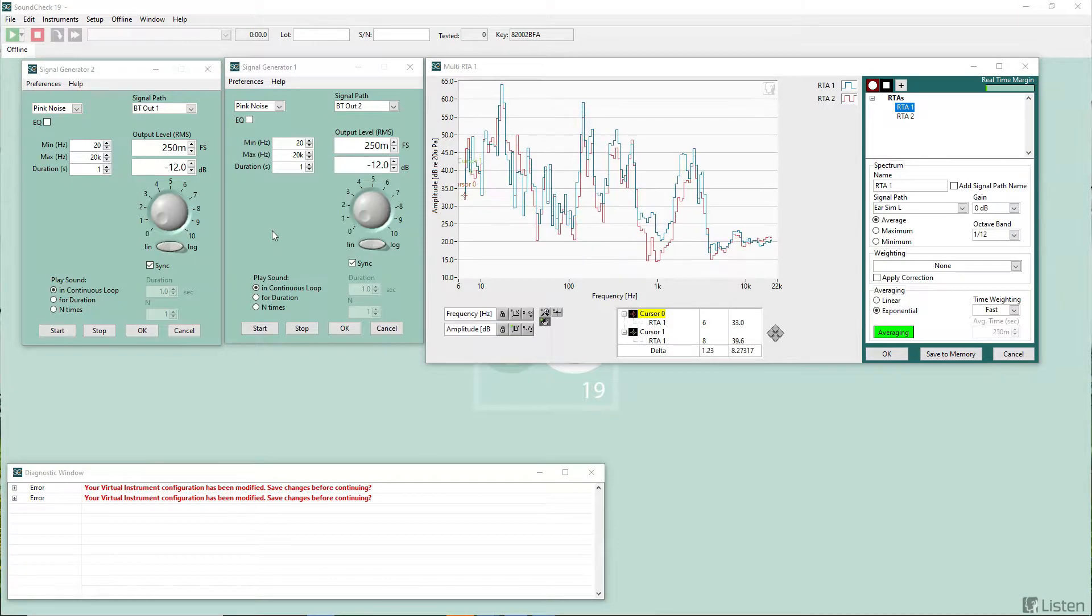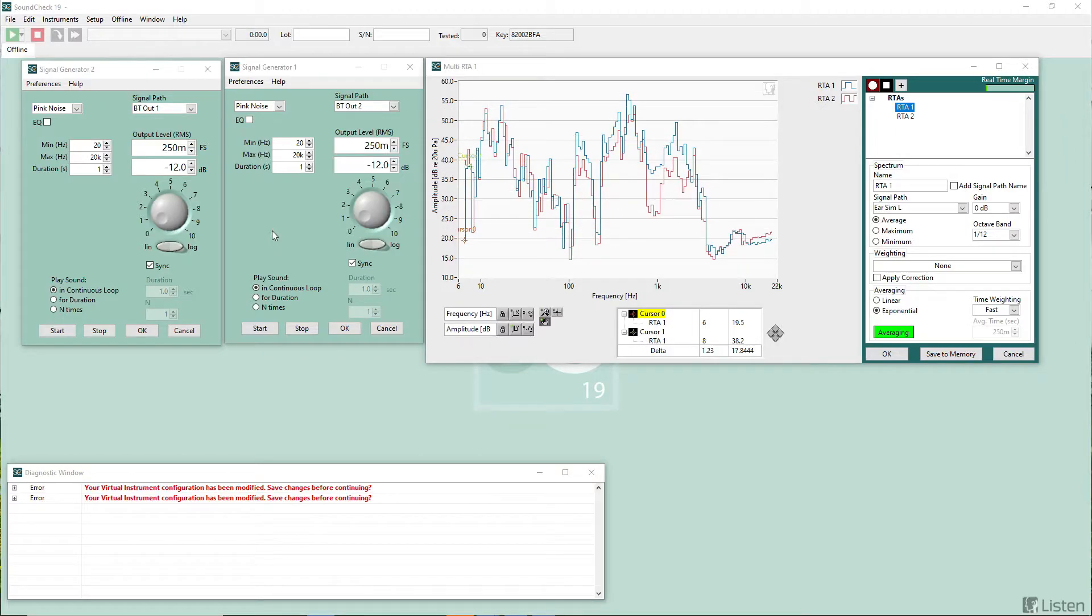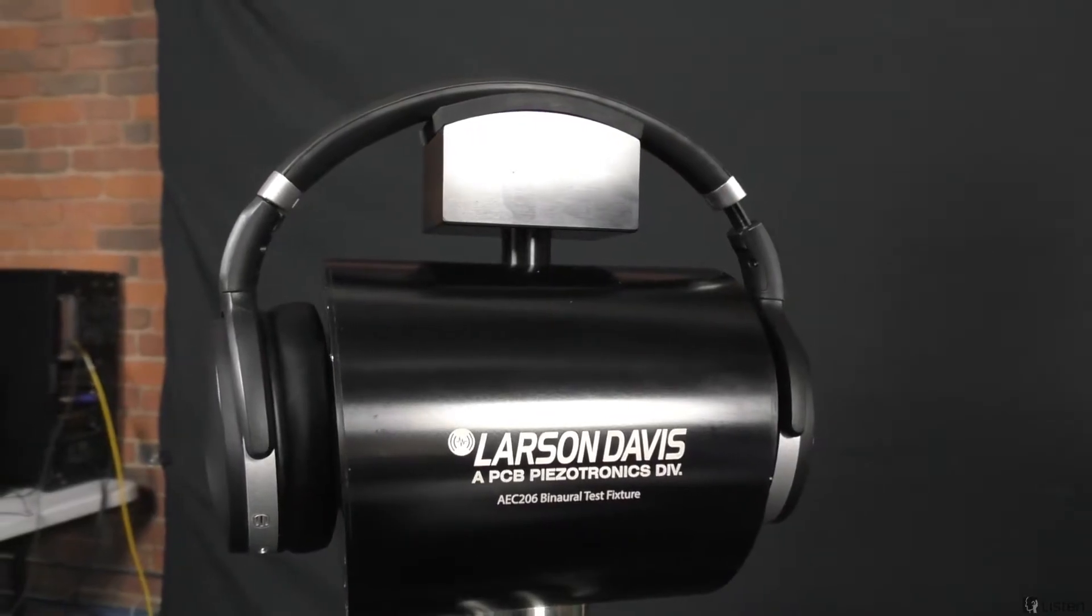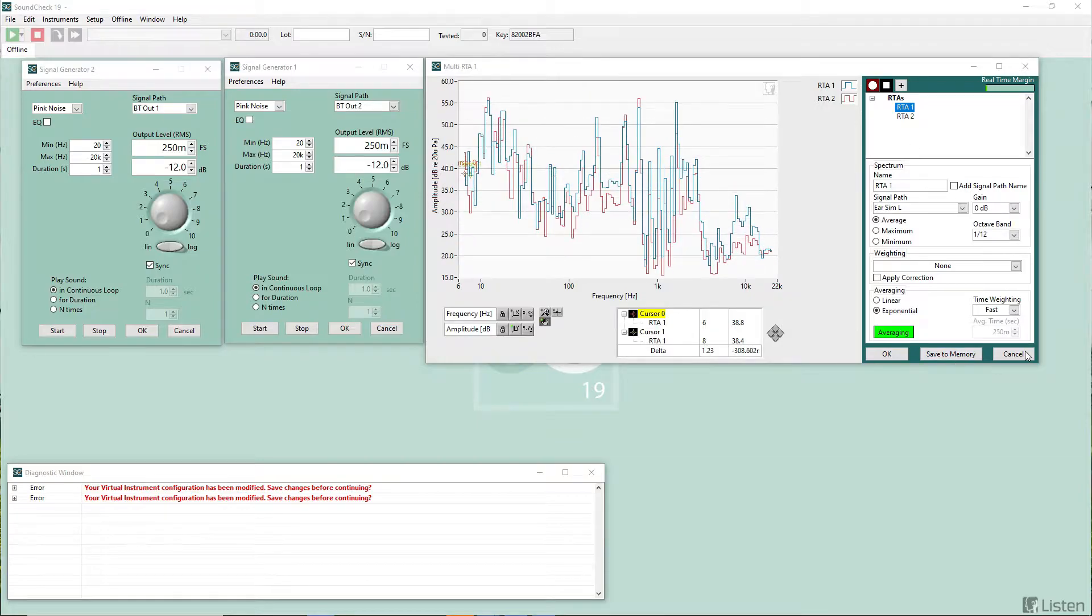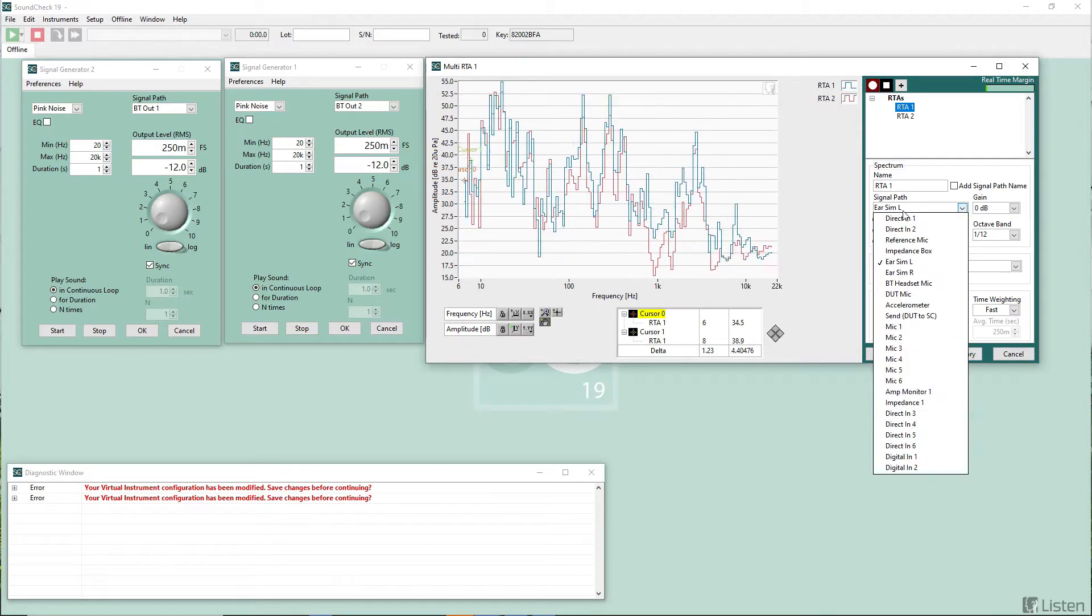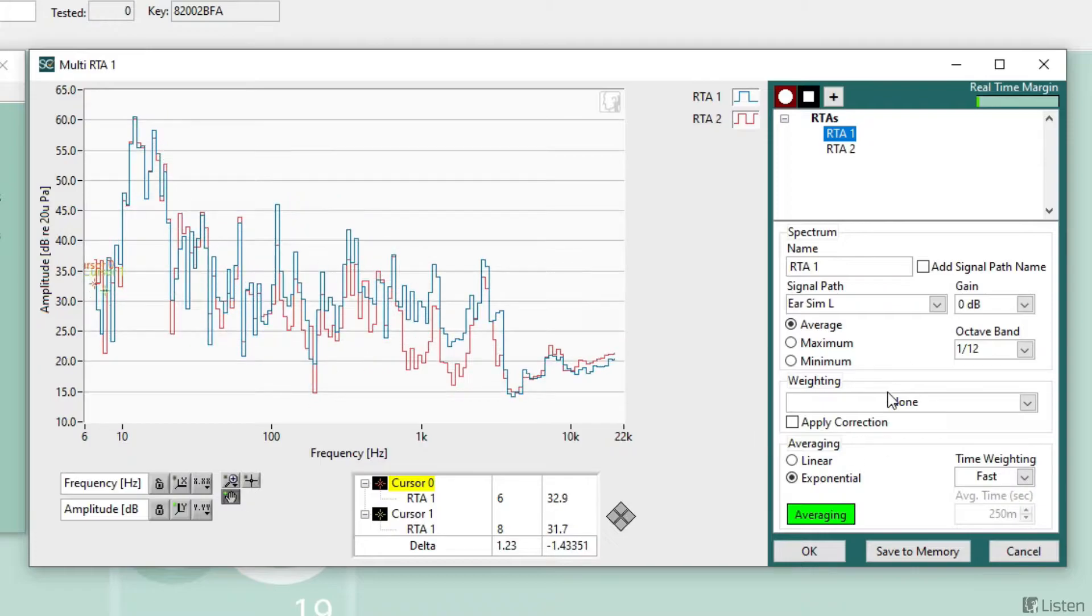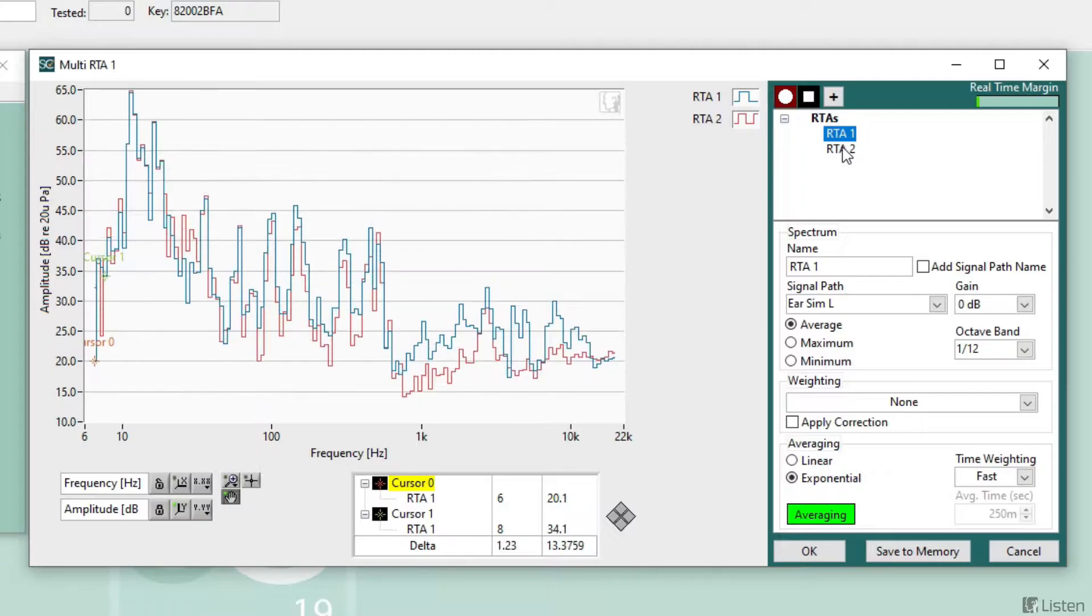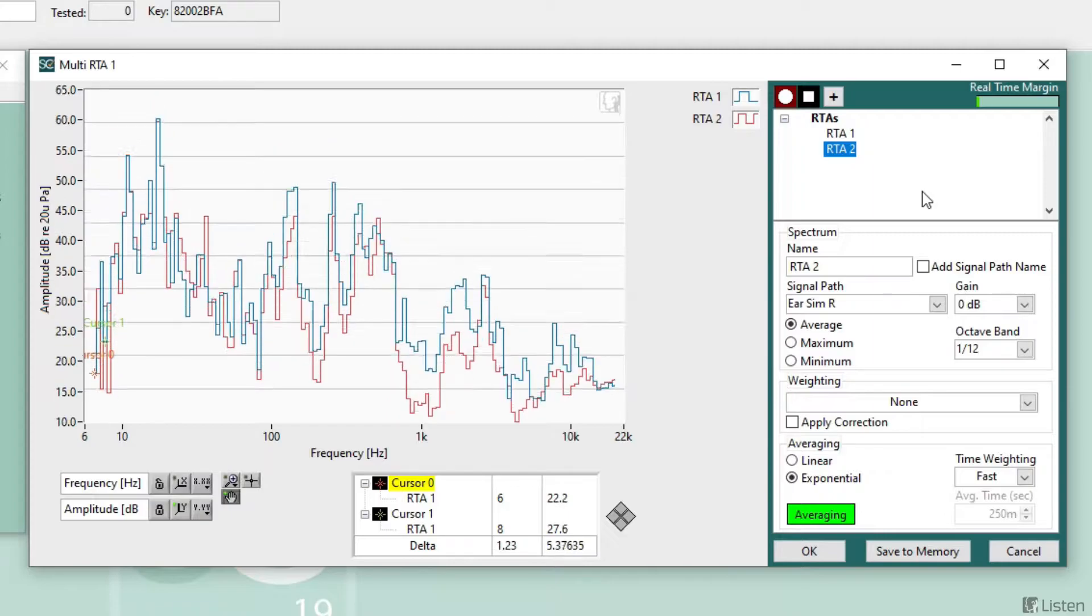So I have a virtual instrument configuration open, and you'll see the new Multi-RTA on the right side. Right now I have it set up with two inputs on my test pad right here, one on the left ear, one on the right ear. The settings for the RTA are identical to the previous RTA. We choose our signal path, octave resolution, resolution, weighting and averaging. The difference here is I can add multiple inputs. These are settings for the first channel input, these are settings for the second channel input.